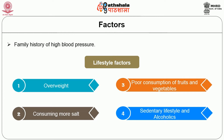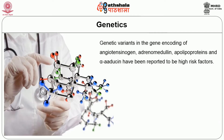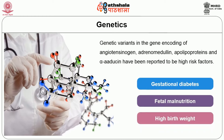Now let us see the etiology of hypertension in diabetes mellitus. Genetics: genetic variants in the gene encoding of angiotensinogen, adrenomedullin, apolipoproteins, and alpha-adducin have been reported to be high risk factors. Apart from gene expression, environmental factors like gestational diabetes, fetal malnutrition, and high birth weight are also predisposing to hypertension with diabetes.